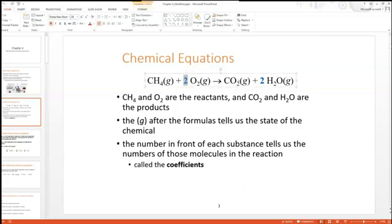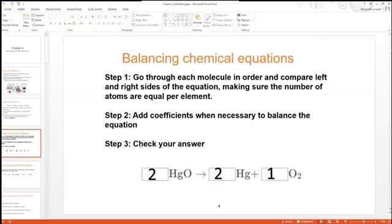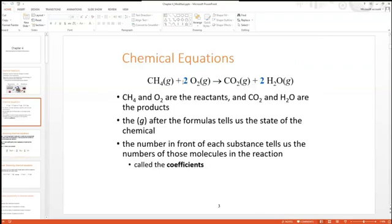Now these coefficients in front of the O2 and the H2O are for the purpose of balancing the reaction. That's one of the main parts of chapter 4. Because if we do not balance the reaction, the number of carbons, hydrogens, and oxygens are not equal on the left and right side. If we did not have this 2 here, there would be 2 oxygens on the left and 3 oxygens on the right. But since we have these coefficients, we can now balance the reaction.